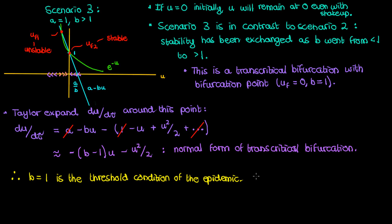What's the interpretation of this? Well recall that b is defined as gamma n over beta s naught. Since we've set a to be one n and s naught are equal so b is really just gamma over beta.